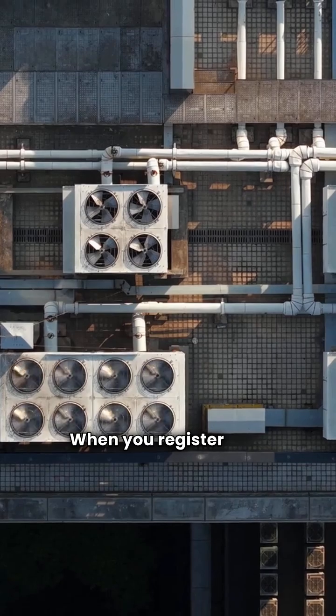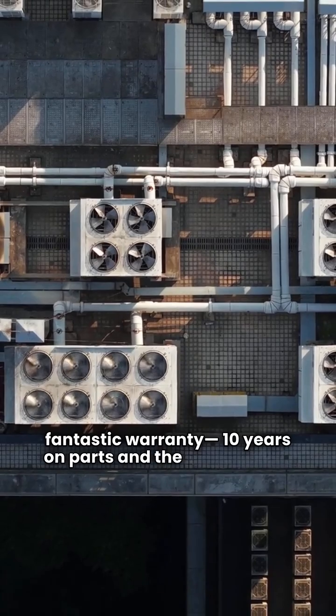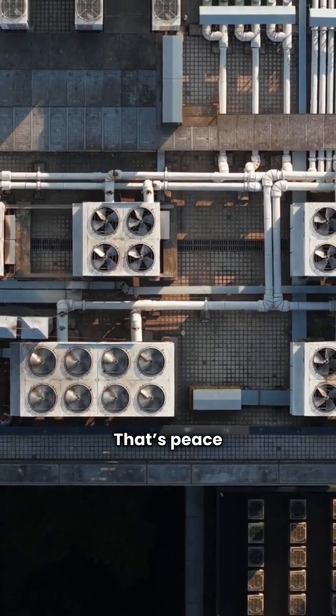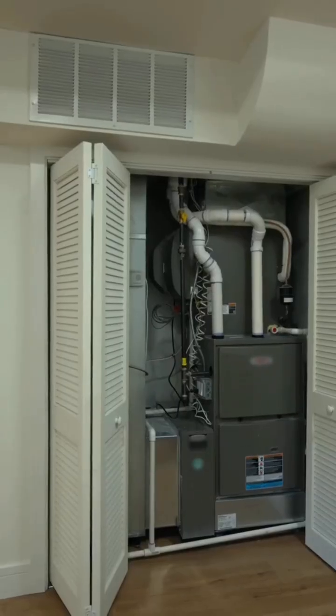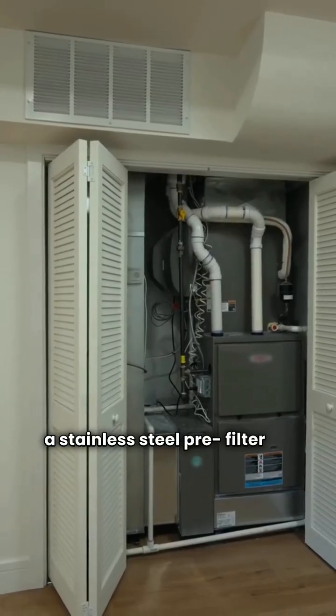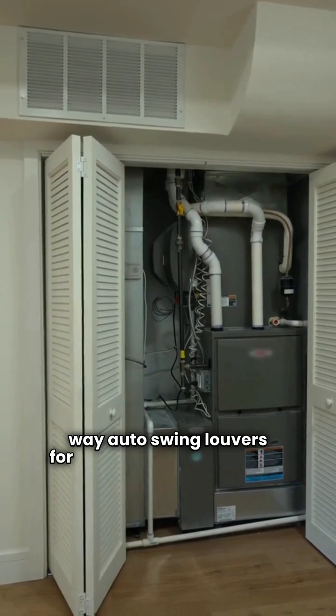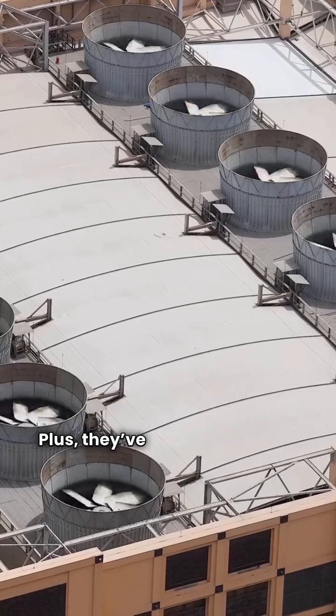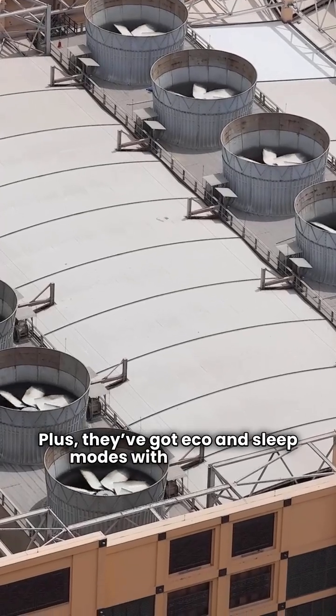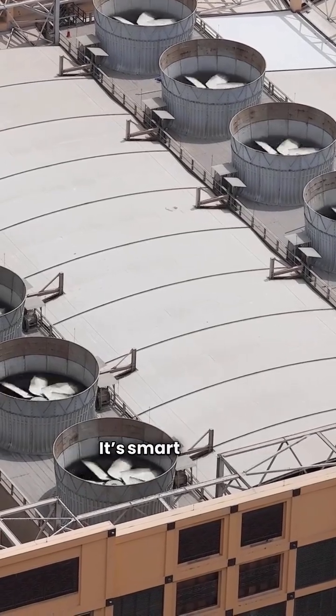When you register your Haier unit, you get a fantastic warranty: 10 years on parts and the compressor. That's peace of mind you can count on. Haier's packed with great features. A stainless steel pre-filter for cleaner air, four-way auto swing louvers for even temperature, and a frost wash cleaning system to keep things fresh. Plus, they've got eco and sleep modes with occupancy sensors to save energy when you're not around. It's smart living.